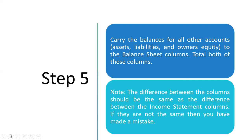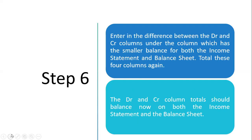Step six: enter the difference between the debit and credit columns under the column which has the smaller balance, for both the income statement and balance sheet columns. The difference in the income statement columns represents a profit or loss, which is then transferred to the balance sheet columns — specifically the column with the smaller balance. Once these balancing figures are entered, the debit and credit column totals should balance for both the income statement and the balance sheet.